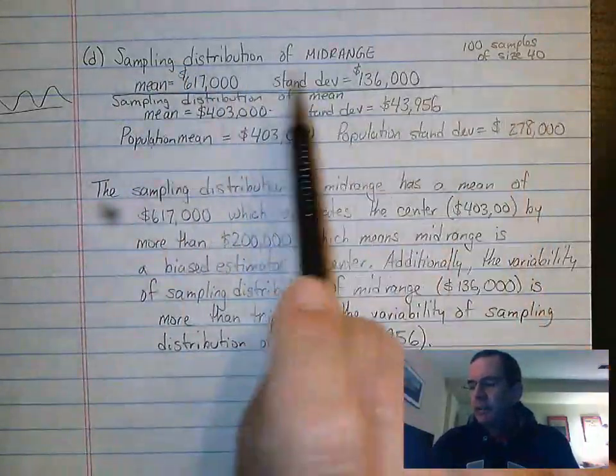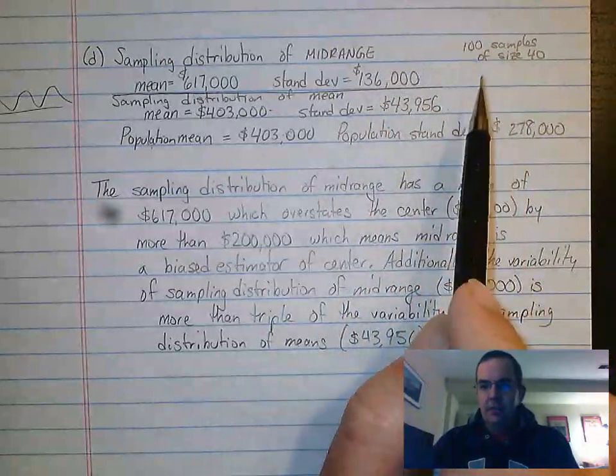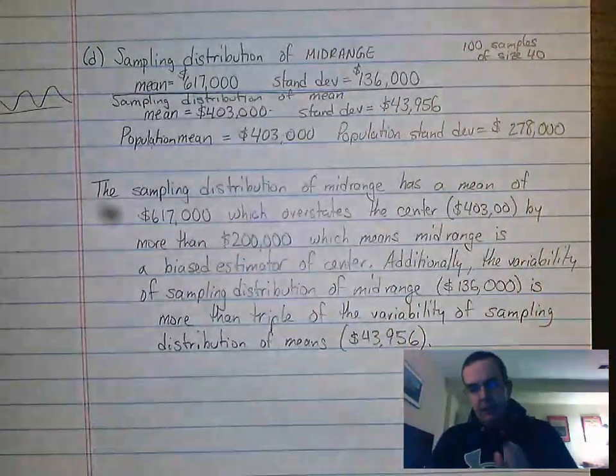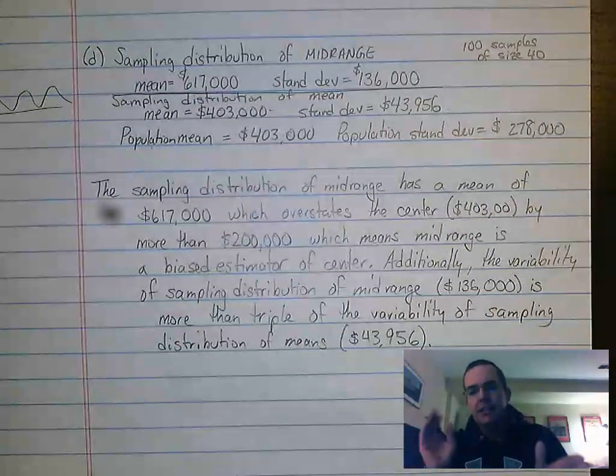The problem said that they ran a sampling distribution of mid-range. So what they did is they took 100 samples of size 40 and for every one of those samples of size 40 they found the biggest and the littlest number, the max and the min, and they averaged them.